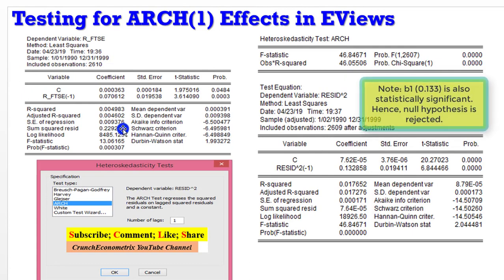This tells us that we are rejecting the null hypothesis in favor of the alternative, which says that there is presence of ARCH effects. Remember, this is the first regression that we did. We are not interested in that result. This is the window for the Heteroskedasticity Test, and this is what we are interested in.